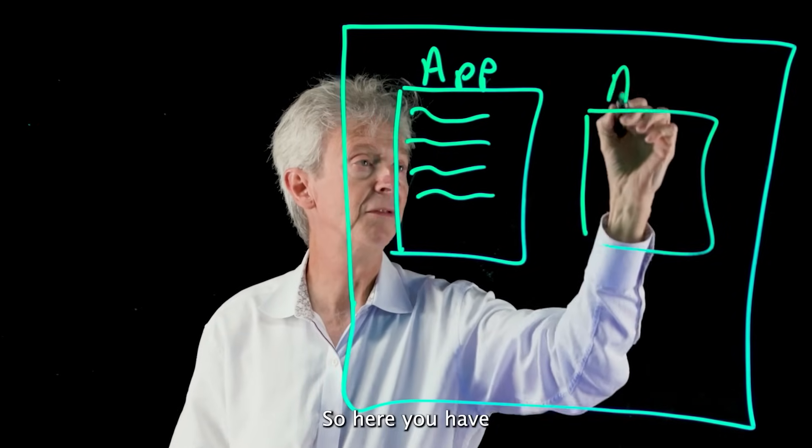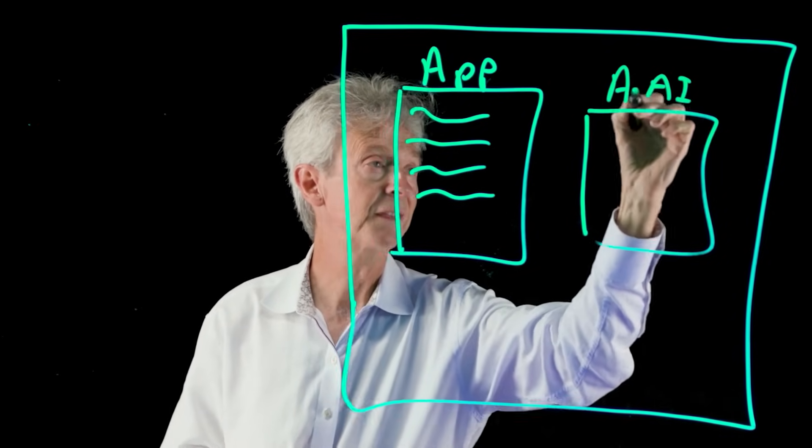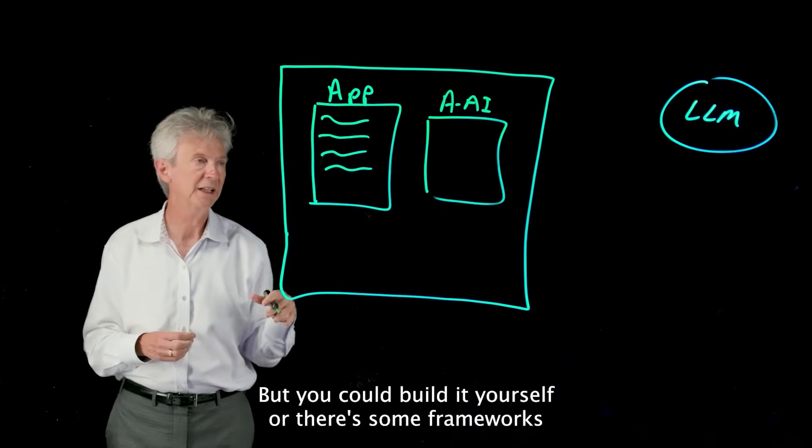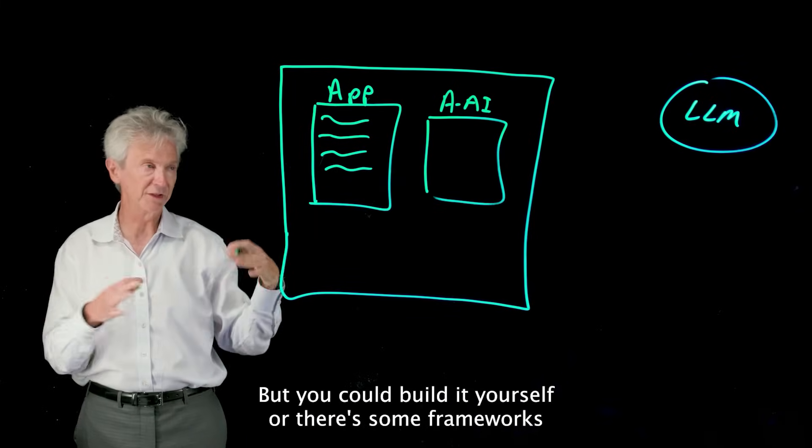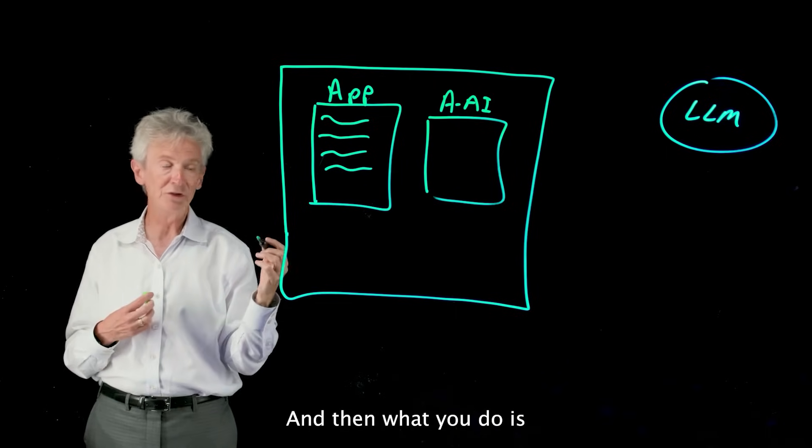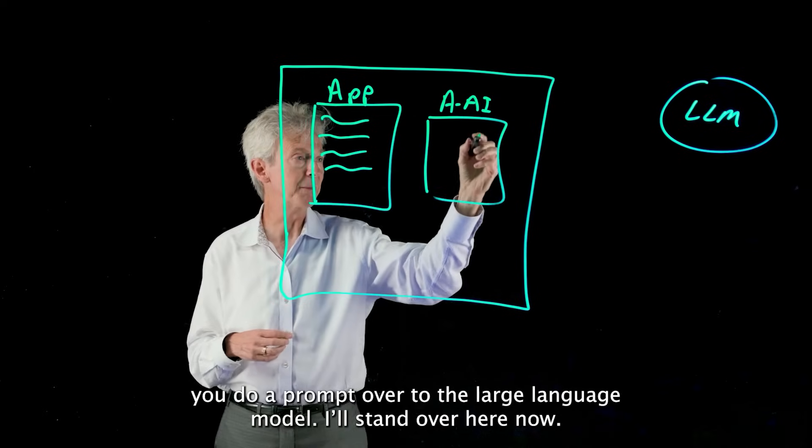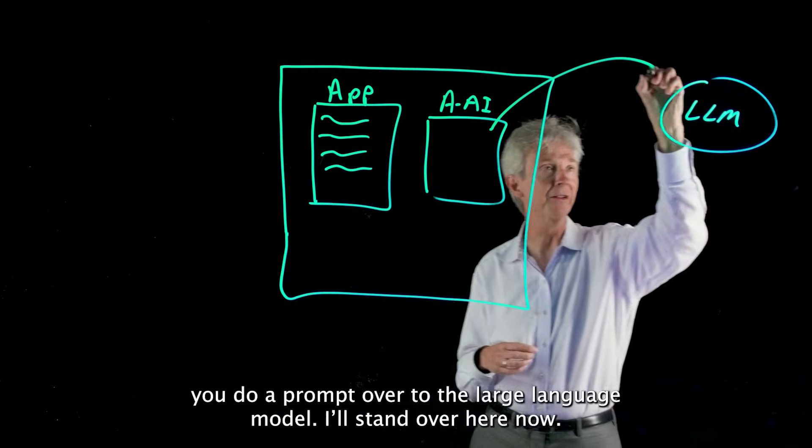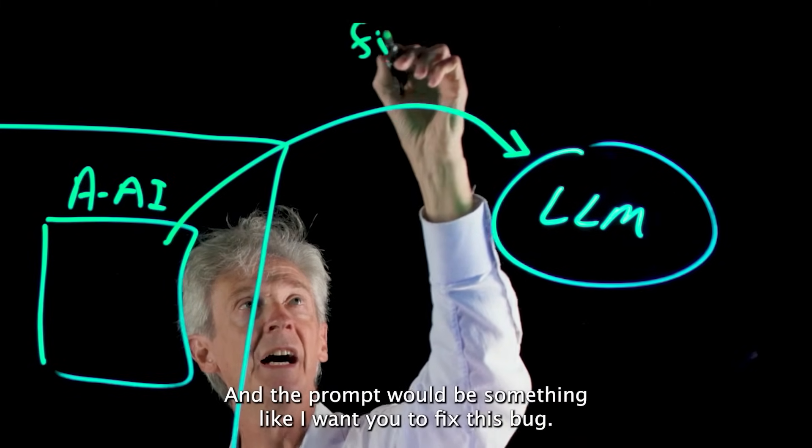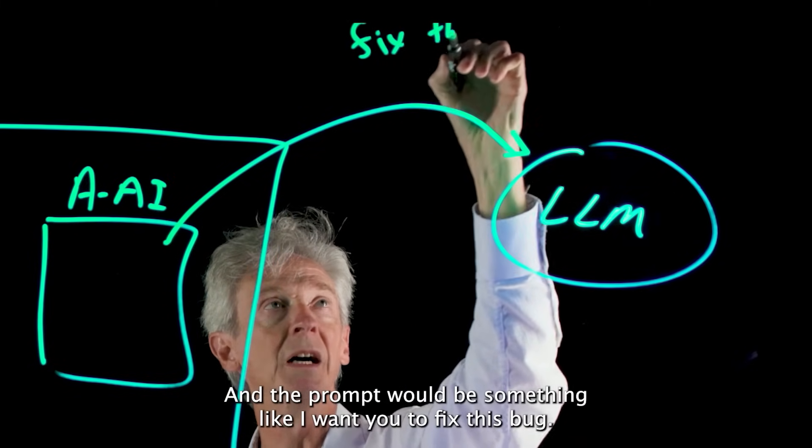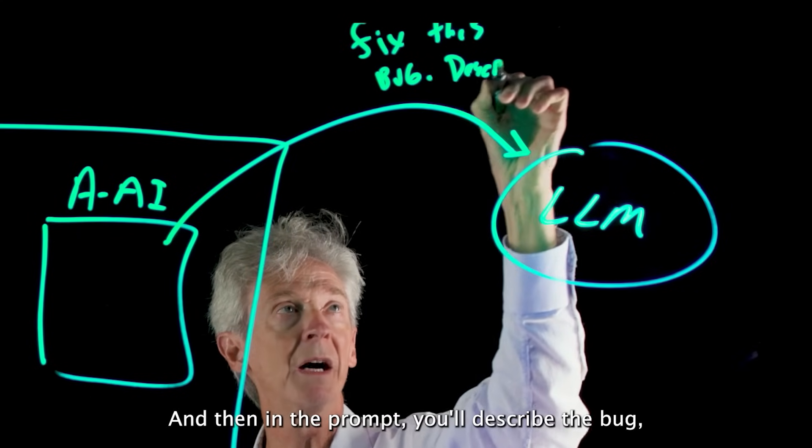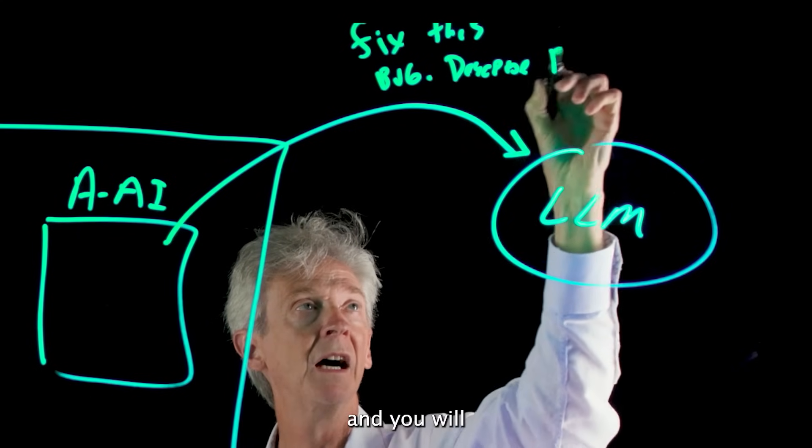So here you have your agentic AI framework, and I can describe how those work, but you could build it yourself or there's some frameworks. This orchestrates this whole workflow and then what you do is you do a prompt over to the large language model over here. The prompt would be something like I want you to fix this bug.